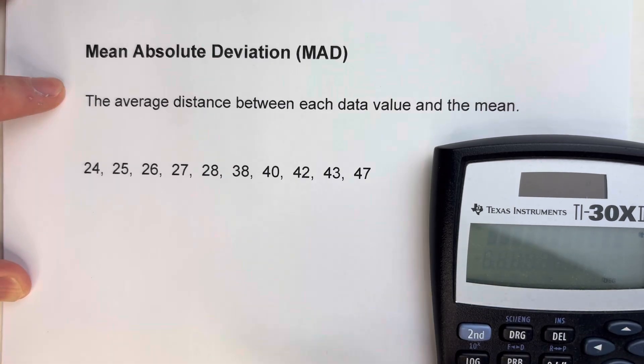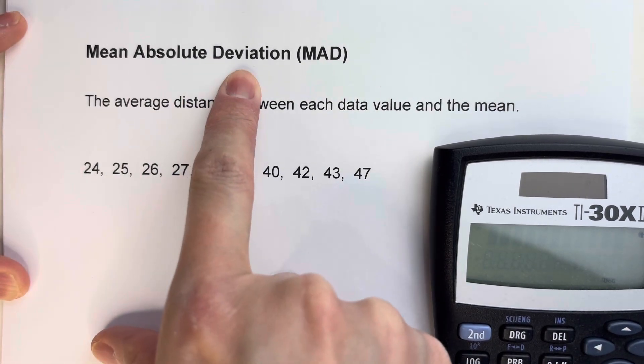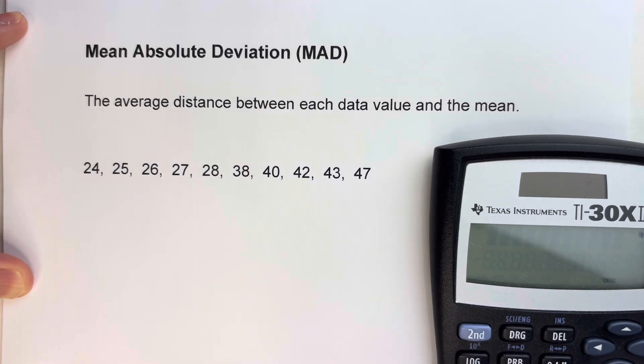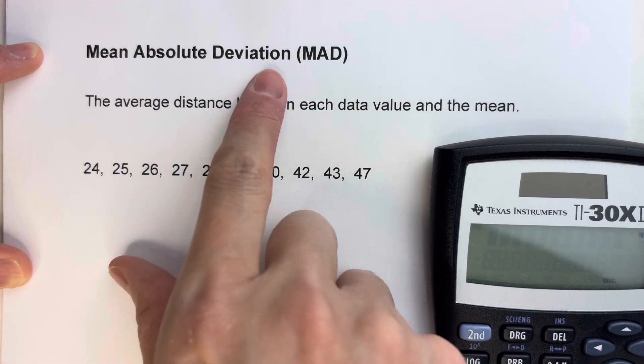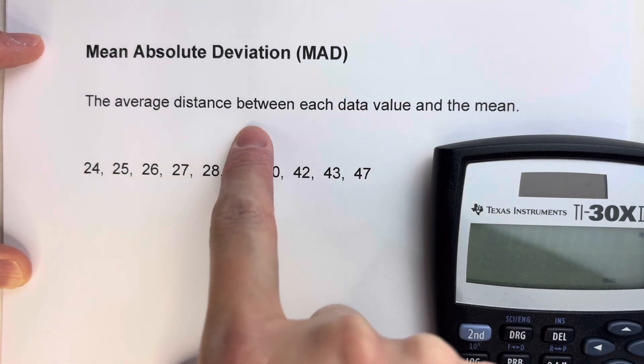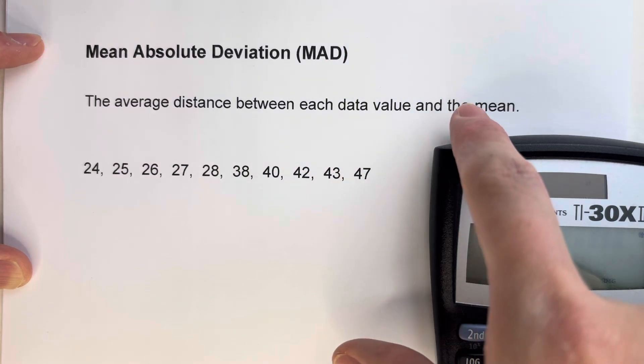So today, we are finding the mean absolute deviation, or the MAD, of a data set. The mean absolute deviation is the average distance between each data value and the mean.